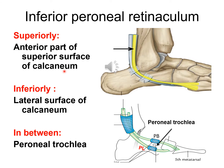Inferior peroneal retinaculum is present anteroinferior to the lateral malleolus. Superiorly it is attached to the anterior part of the superior surface of calcaneum and inferiorly to the lateral surface of calcaneum. In between, a few fibers are attached to the peroneal trochlea, dividing the compartment into an upper and a lower one. The peroneus brevis tendon passes through the upper compartment and the peroneus longus tendon passes through the lower compartment, each covered by separate synovial sheaths.